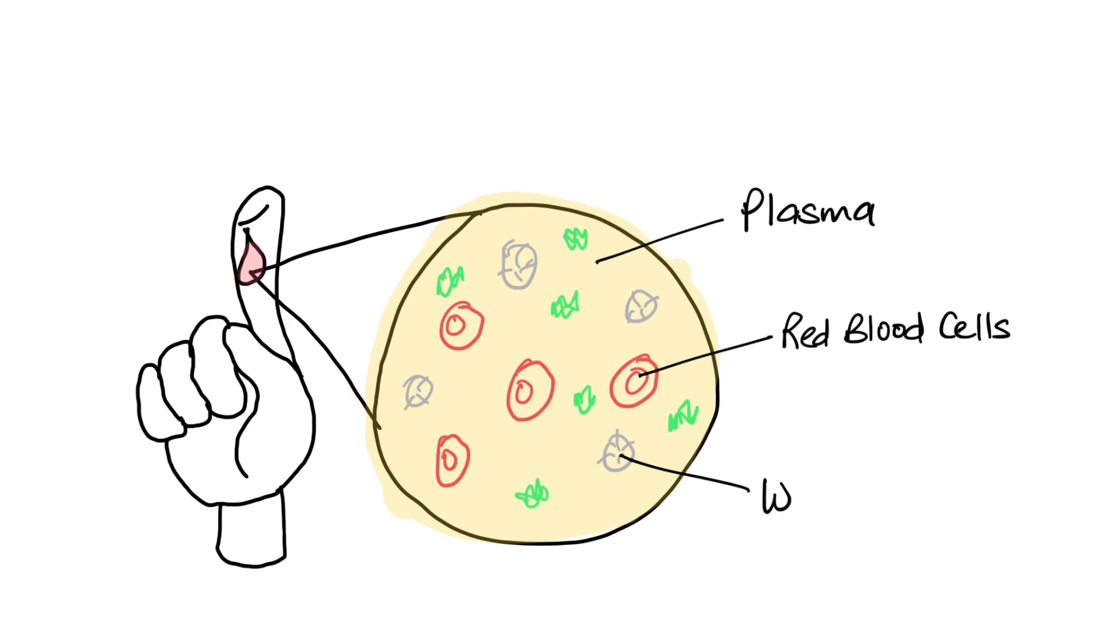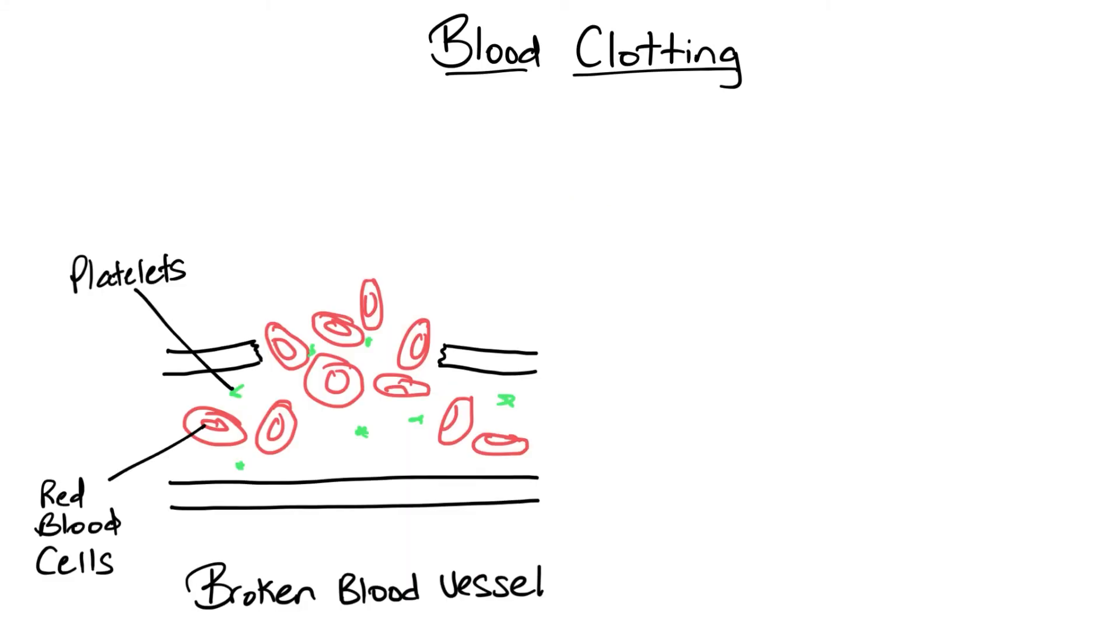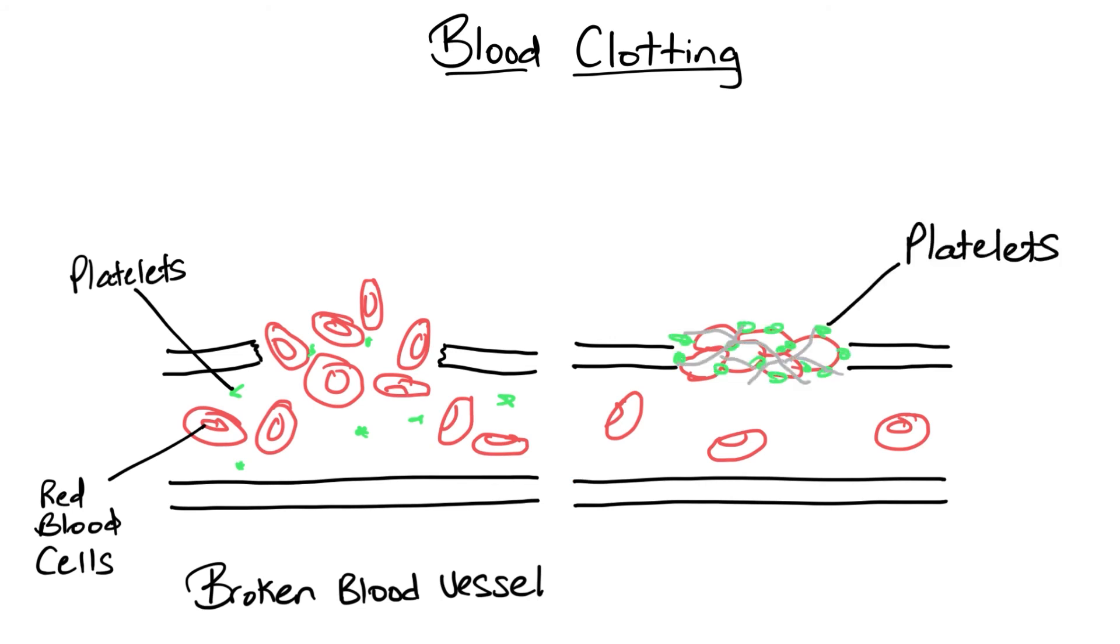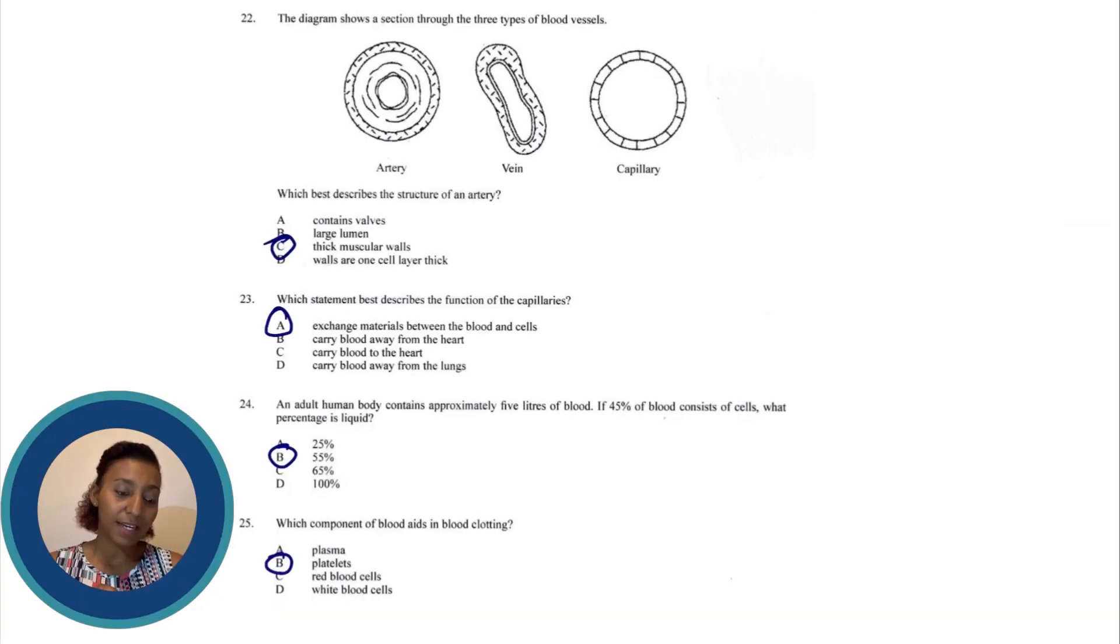And the white blood cells, well they are responsible for attacking pathogens and any sort of disease causing bacteria that may enter the body. So the answer is B, platelets. The platelets are cells whose job is to help with blood clotting. If for some reason you get a cut or a blood vessel in your body gets broken, the platelets then clump together to form a blood clot. The purpose of that is to stop the bleeding in the area. So yes, the answer is B.